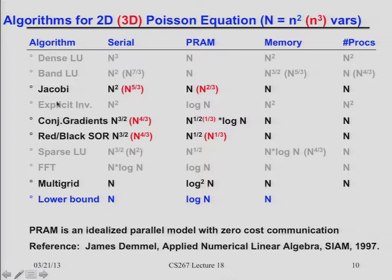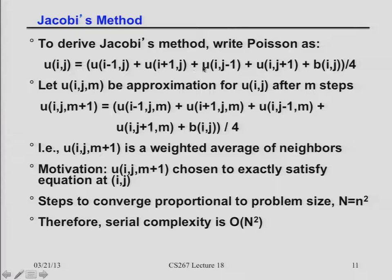Today my goal is to talk about Jacobi, briefly remind you about conjugate gradient, do red-black SOR — both building blocks for multigrid, which is the optimal algorithm. So let me start with Jacobi. Here is the equation I want to solve on a two-dimensional mesh where i and j are my x and y coordinates. At every point I want the value of the solution to be the average of all four neighbors — the neighbor to the left (i minus one), the right, the one below, the one above — plus my right-hand side. So I'm solving T times u equals b.